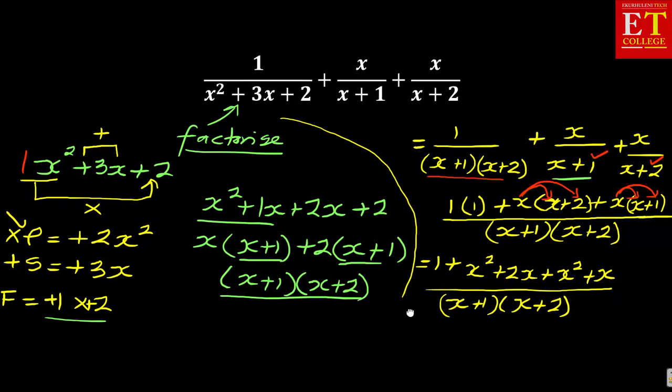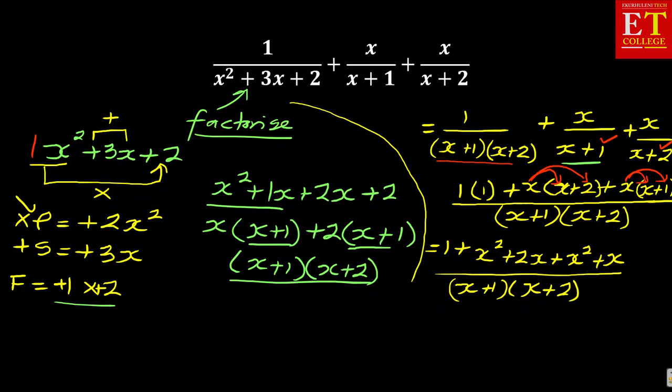You're collecting like terms now. You're going to have the x², and the x² together. You group them, and then you're going to have the 2x and the x and then the 1. If you're collecting like terms, x² + x² you get 2x², plus 2x + x you get 3x, plus 1, all over (x + 1)(x + 2).